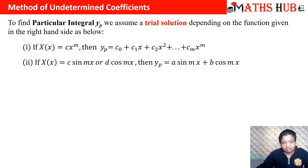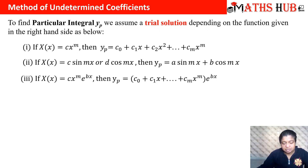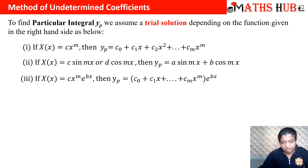Similarly, if we have sine or cosine on the right-hand side, we assume the trial solution to be the sum of sine and cosine with different coefficients, say a and b. The third case is when we have a product function like x to the power m times e to the power bx; we take e to the power bx multiplied by a polynomial function up to x to the power m.